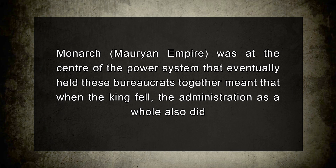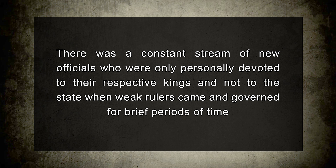Ashoka had complete control over the government, but the same cannot be said for the monarchs that followed him. The Mauryan state required a powerful king due to its bureaucratic structure. When the king fell, the administration as a whole also did, and the provinces started to split apart. The king personally selected the members of the state and they were solely obedient to him, meaning officials under weak rulers were only personally devoted to their respective kings and not to the state.